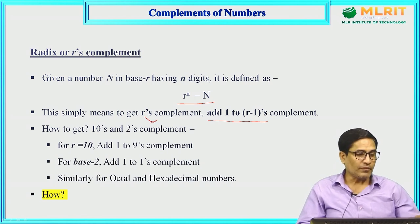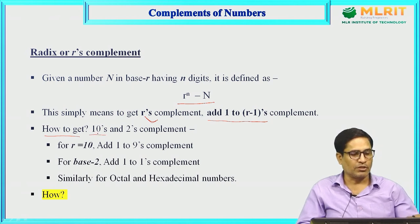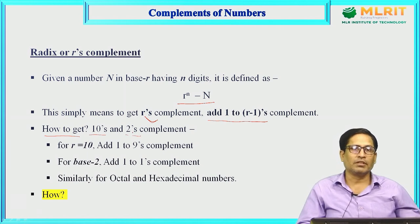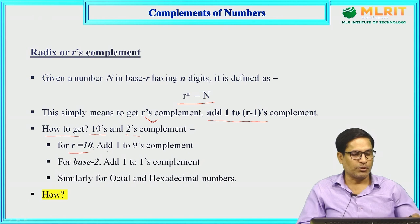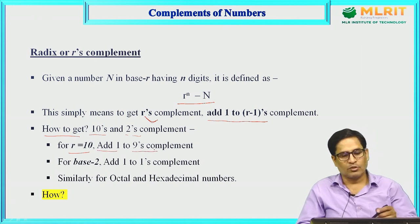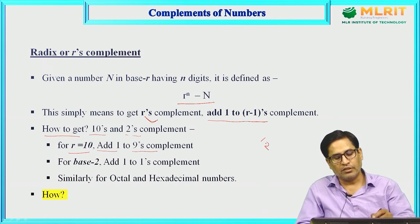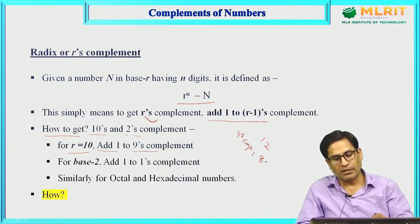To calculate r's complement, add 1 to the r-minus-1's complement. For decimal (r=10): 10's complement = 9's complement + 1. Example: the 9's complement of 12 is 87, so the 10's complement of 12 is 87 + 1 = 88.